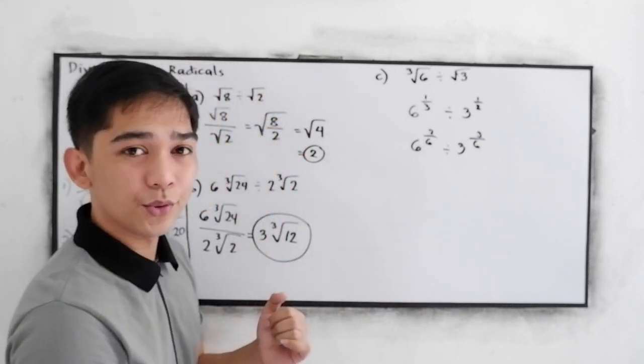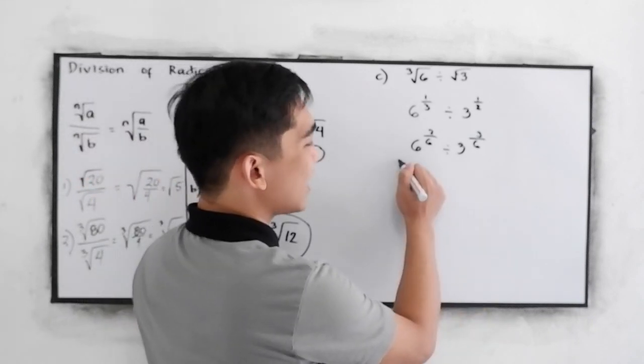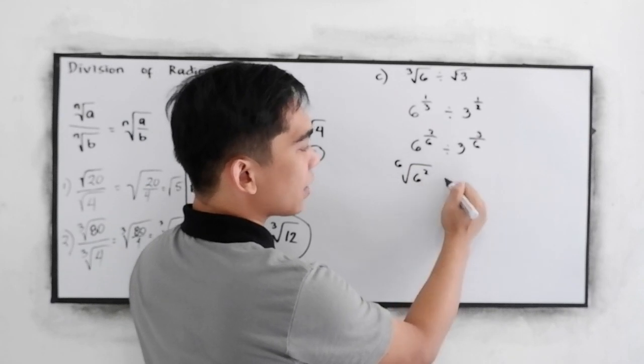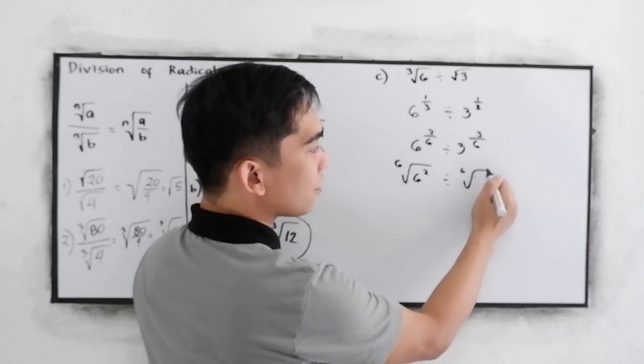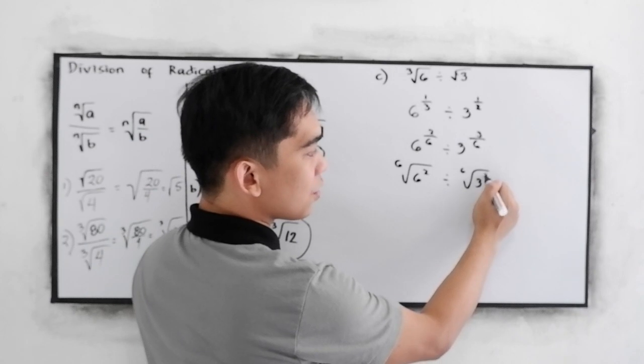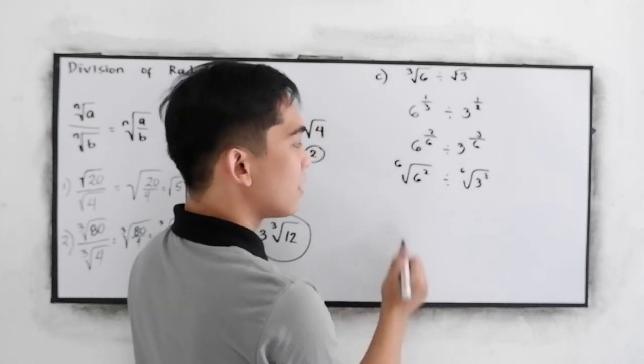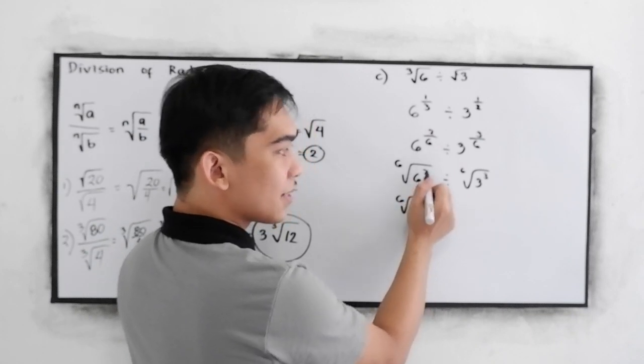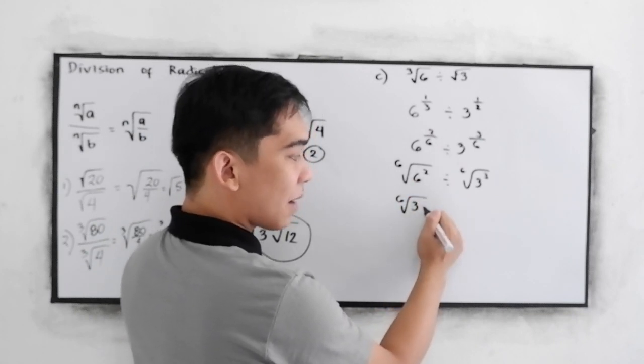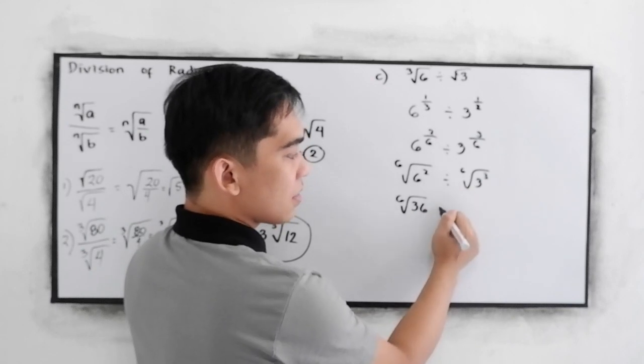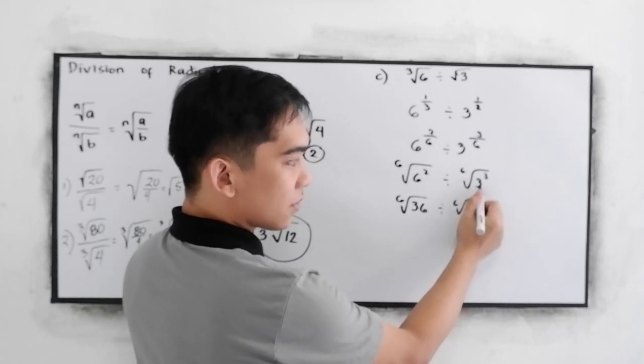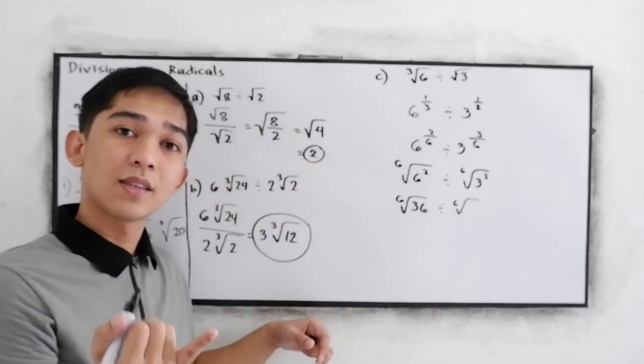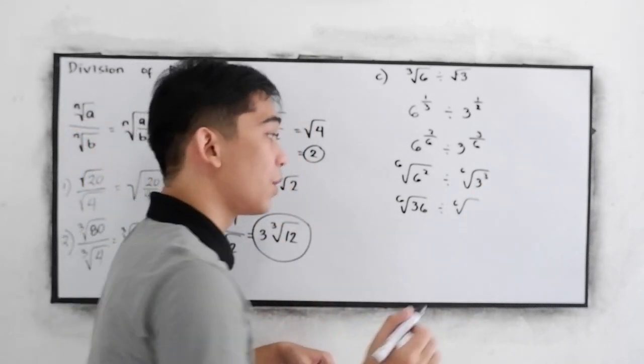Next, we'll write into radical form. We have 6 root of 6 squared, divided by 6 root of 3 cubed. This can be written as 6 root of 6 squared, that is 6 times 6, 36, divided by 6 root of 3 cubed, that is 3 times 3 times 3, which is 27.